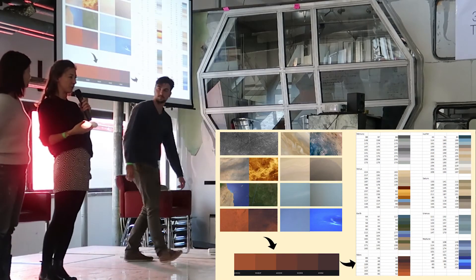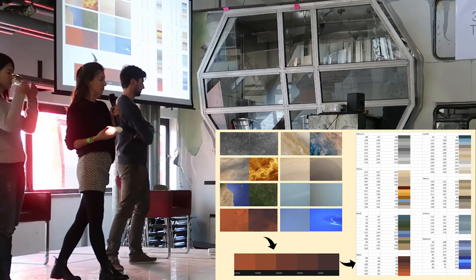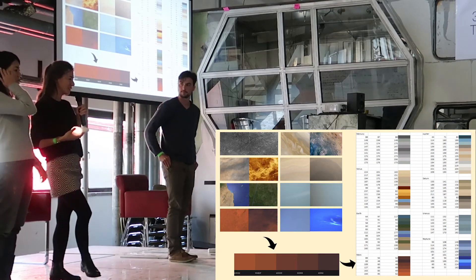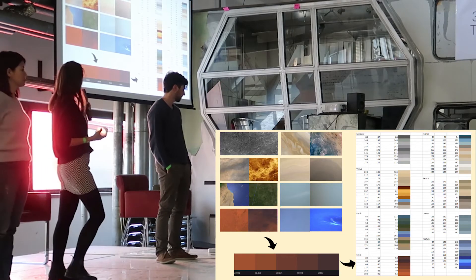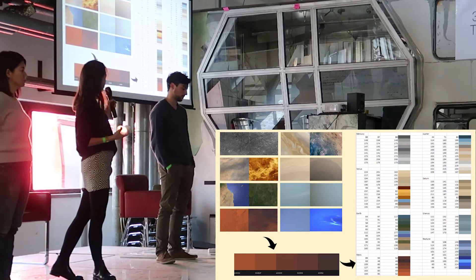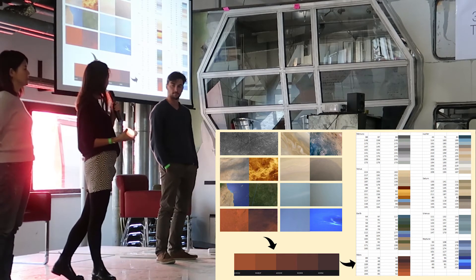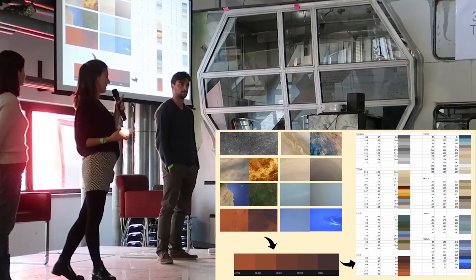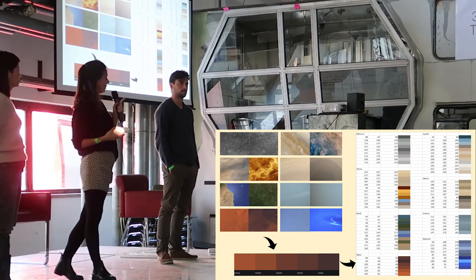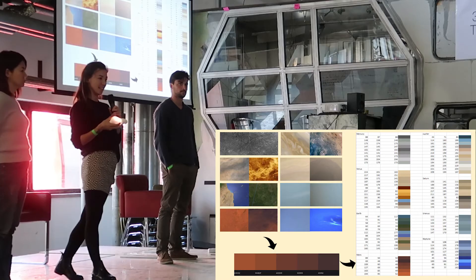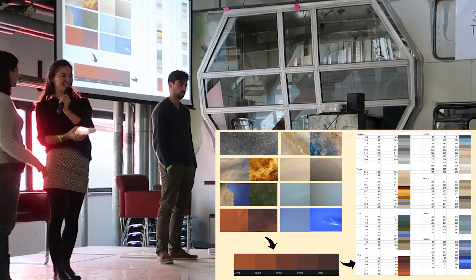To get the colors, we used the 'Eyes on the Solar System' app from NASA and took screenshots of all the planets. We used JavaScript to extract the main colors that make up each planet. Because those were in hex format, we had to transform them to RGB values for the LED inside. Now my teammate is going to explain the mechanics.